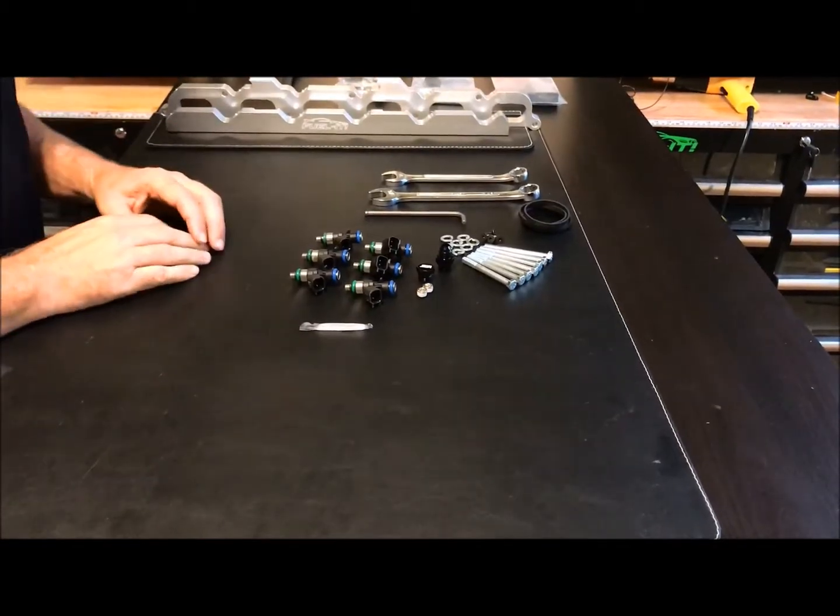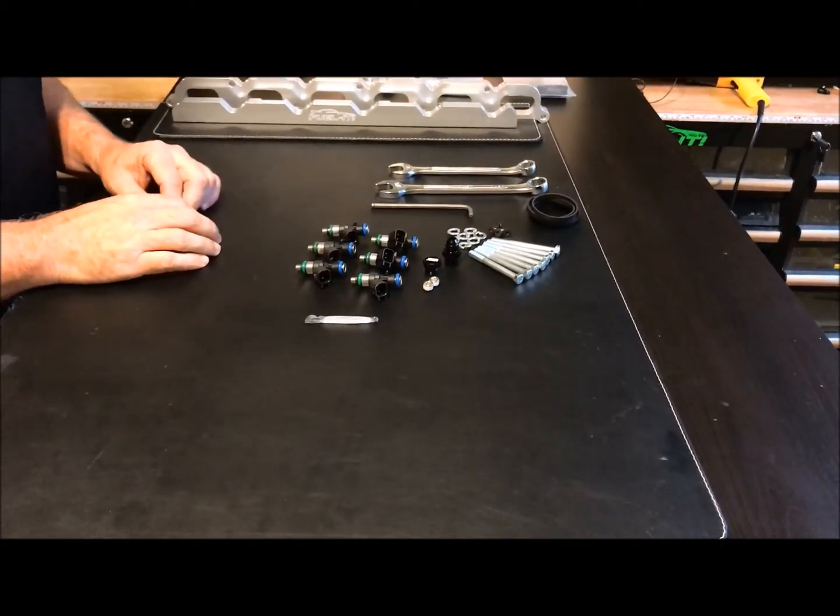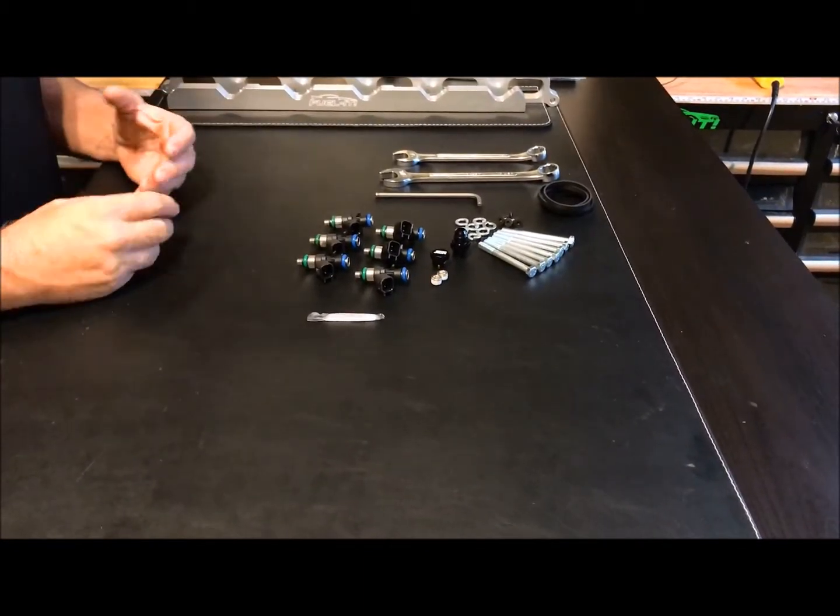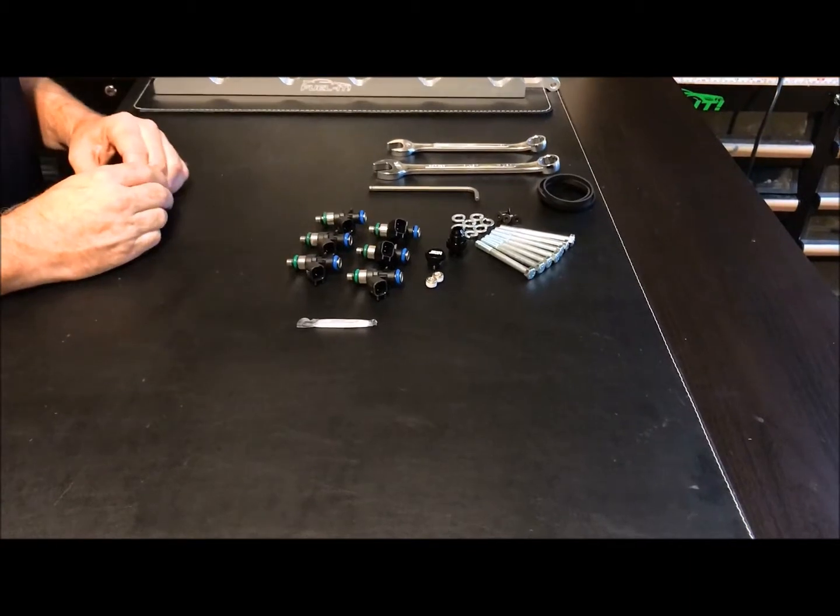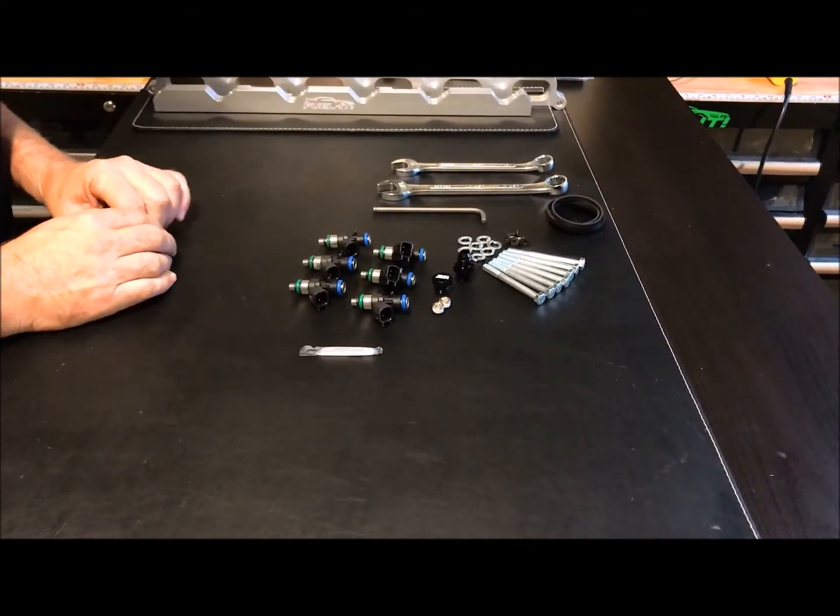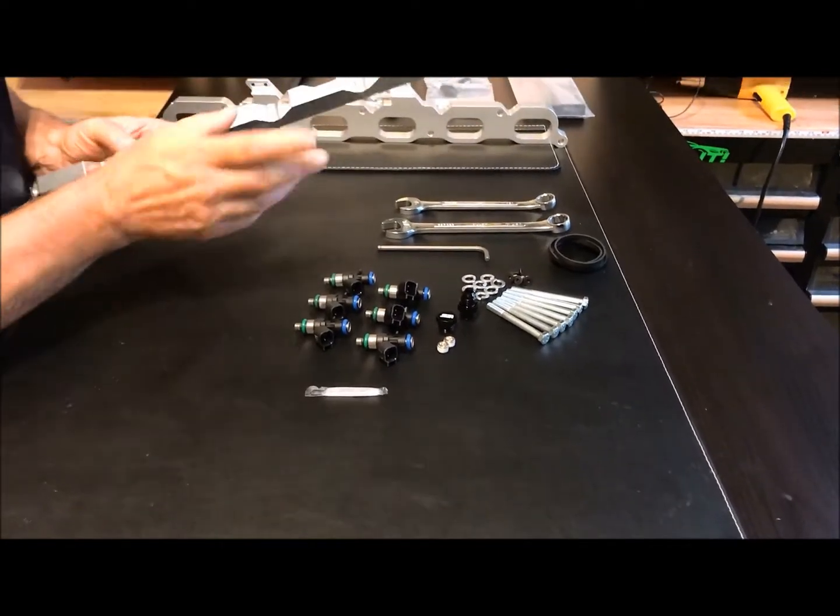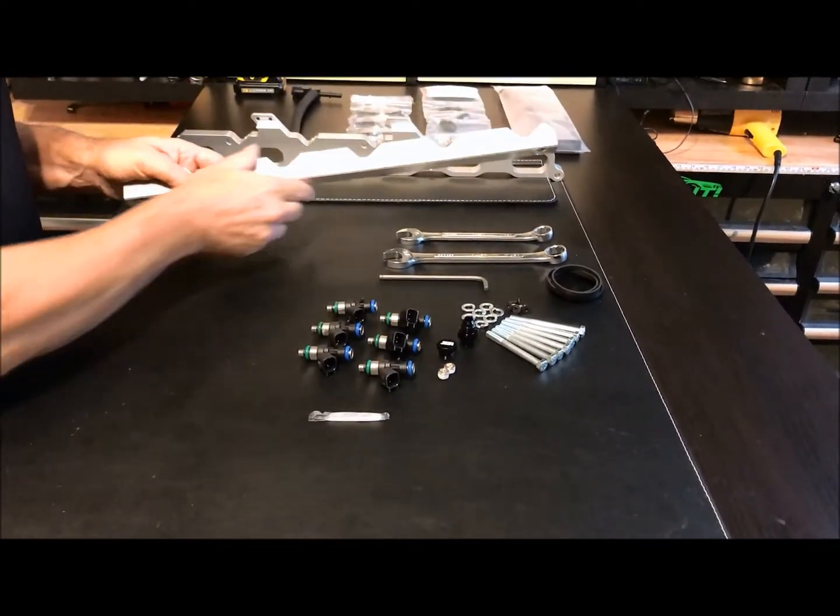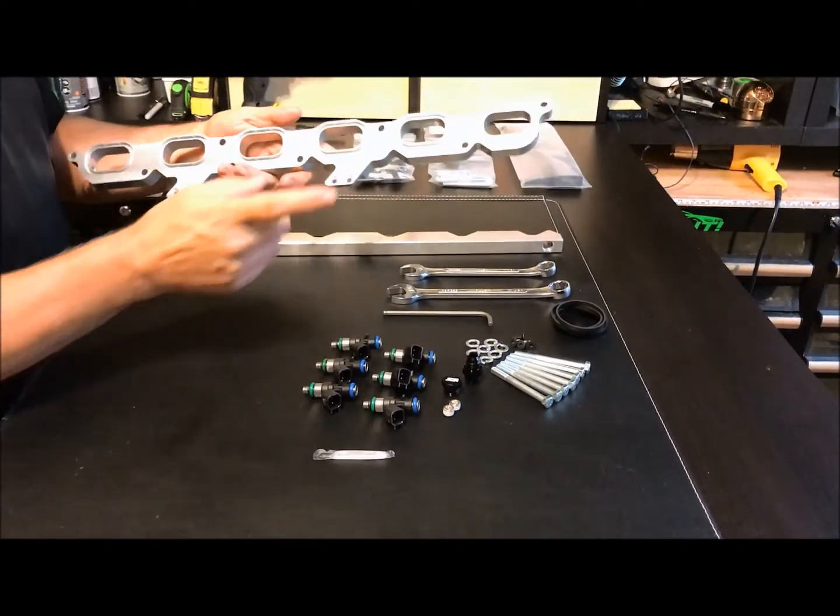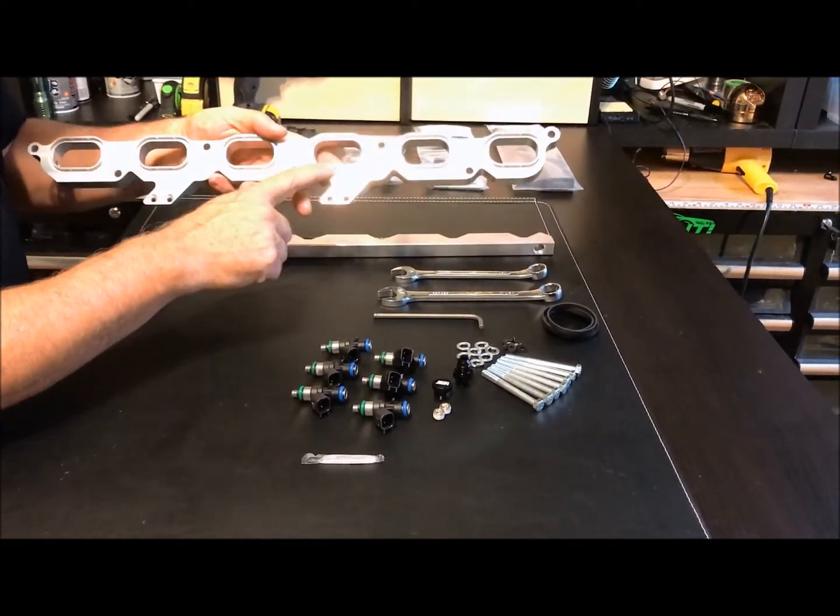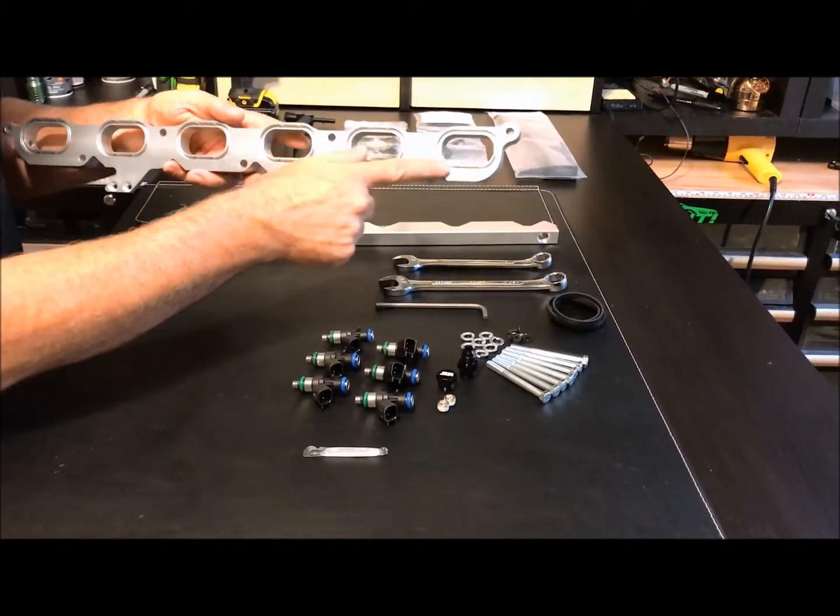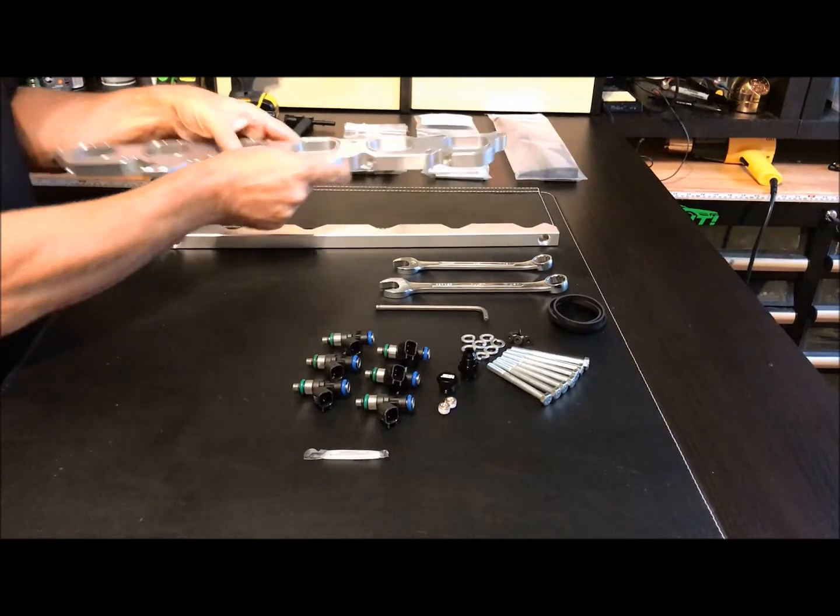Alright guys, we're going to go ahead and do our basic kit assembly right now. Show you how to install the injectors, where everything goes, just kind of a quick basic install guide. So first of all, we have our fuel rail and then we have our spacer kit and the OEM spec gasket grooves for the interface between the spacer and the head.